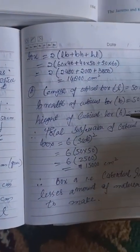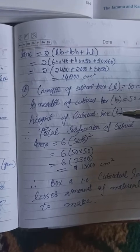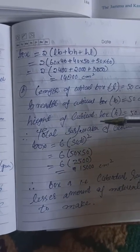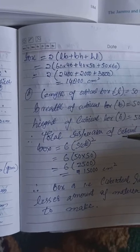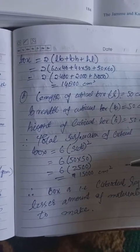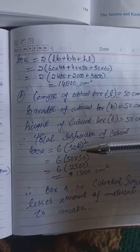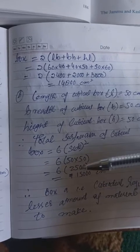For the cubical box, length, breadth, and height are all 50 centimeters. The total surface area of a cube is 6 times side squared.